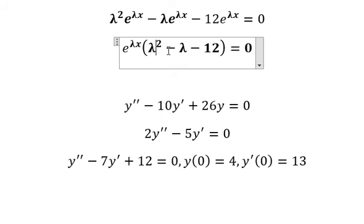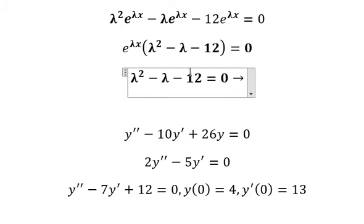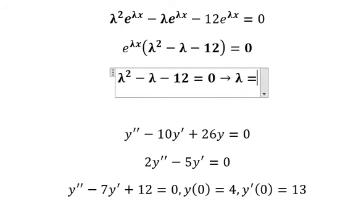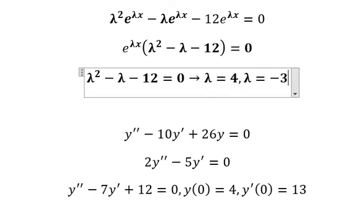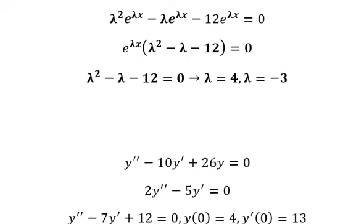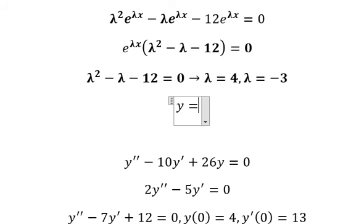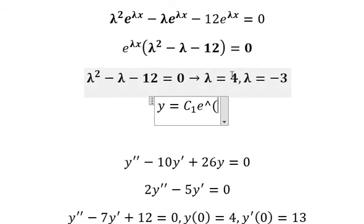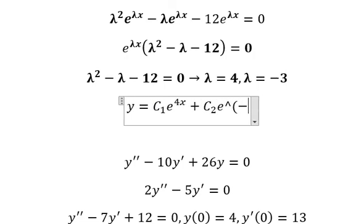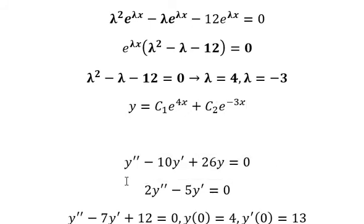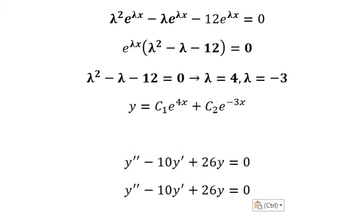We set the characteristic equation equal to zero and find solutions: lambda equals 4 and lambda equals negative 3. So the final answer is y equals c₁ e to the power of 4x plus c₂ e to the power of negative 3x.